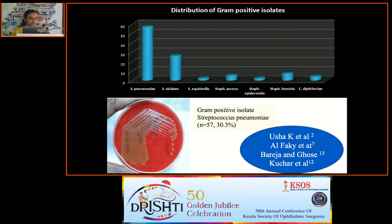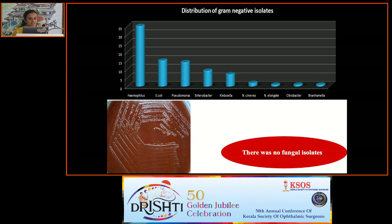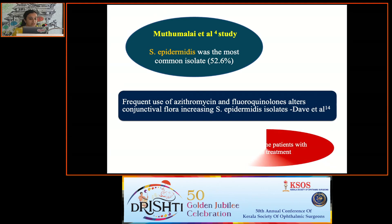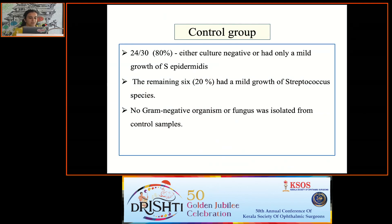The most common gram-positive isolates were Streptococcus pneumoniae, Streptococcus viridans, and Staphylococcus hominis, similar to many previous studies. The most common gram-negative organisms were Haemophilus, E. coli, followed by Pseudomonas. There were no fungal isolates in our study. In the Murugesan et al. study, Staphylococcus epidermidis was the most common isolate, which is reasonable to assume is due to frequent antibiotic use altering conjunctival flora, as stated by Dave et al. Among the control group, 80% were either culture-negative or had only mild growth of Staphylococcus epidermidis.